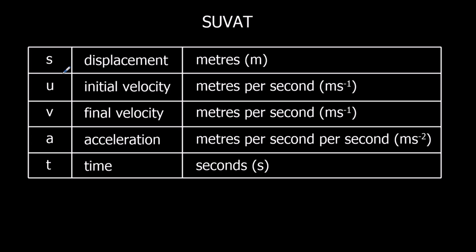S is displacement, which we measure in meters. You might see distance written instead of displacement — displacement is the vector version of distance, so displacement is distance with a direction. U is the initial velocity, which we measure in meters per second. You might see speed written instead of velocity. Speed is velocity without a direction, or velocity is speed with a direction — velocity is the vector version of speed.